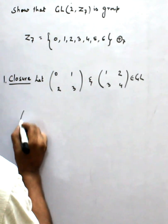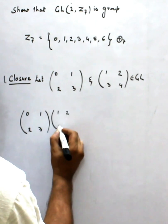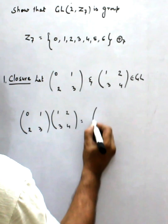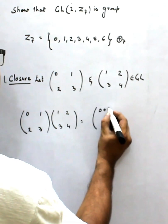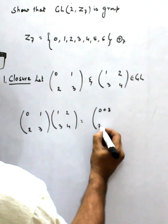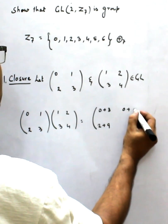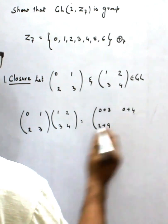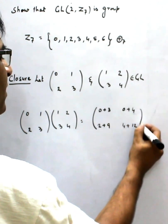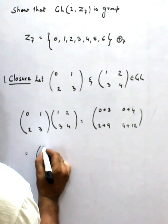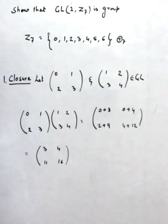Now I check the multiplication — the product of these two matrices. [0, 1; 2, 3] multiplied by [1, 2; 3, 4] gives us: 0+3, 0+4, 2+9, 4+12, which becomes [3, 4; 11, 16]. Our operation is addition modulo 7, so I divide by 7.